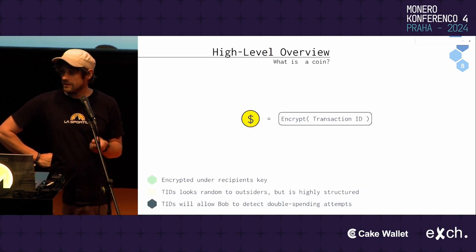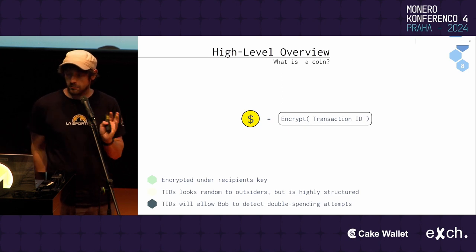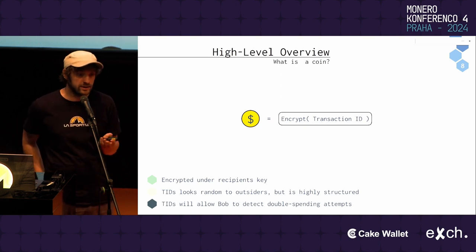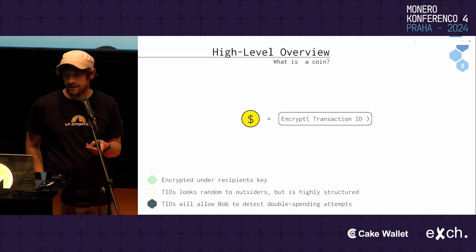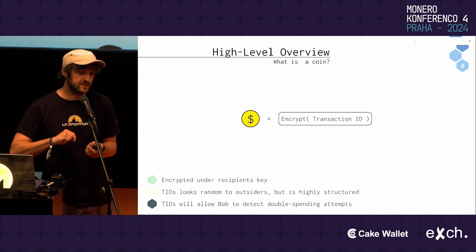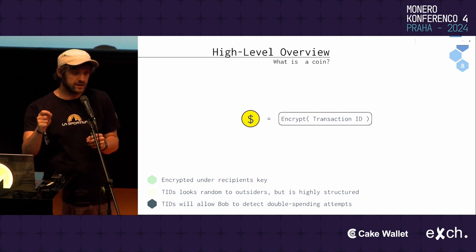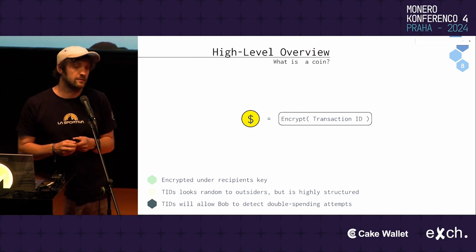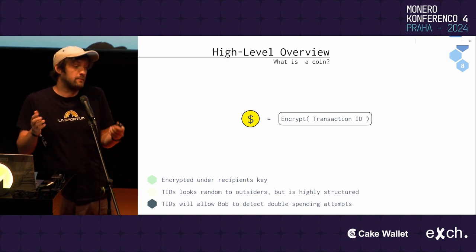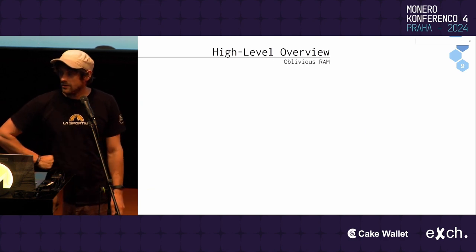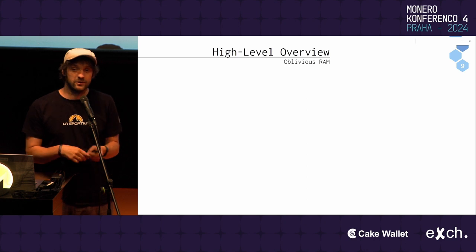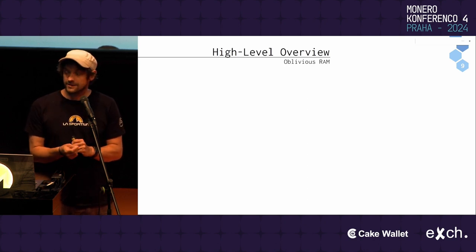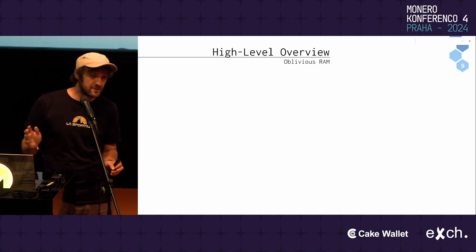The transaction ID is also what allows Bob to detect double spending — there's something in it where Bob can check: I haven't seen that yet, so this must be the first time this coin is being used to pay me specifically. This leads us into the territory of oblivious RAM.